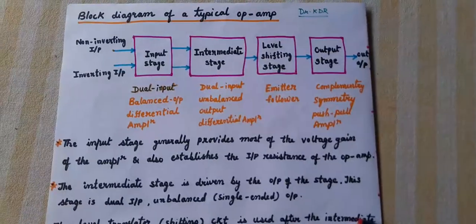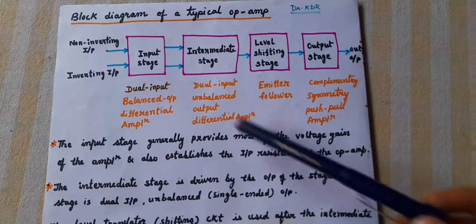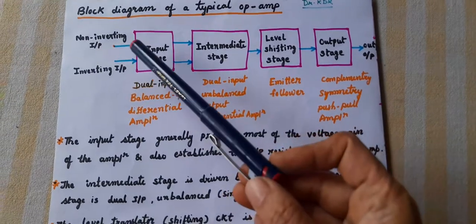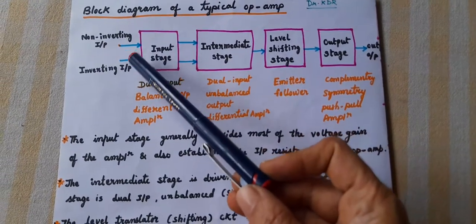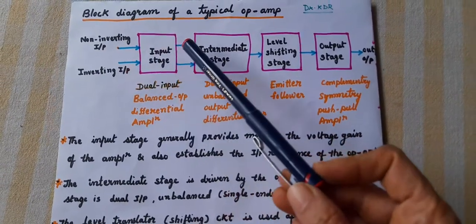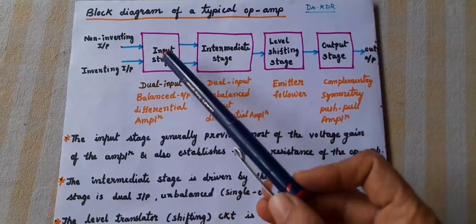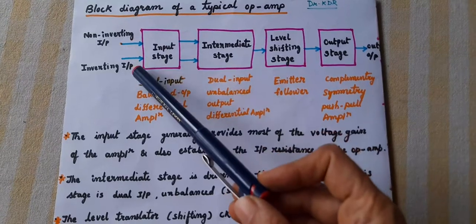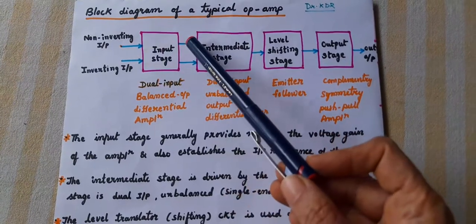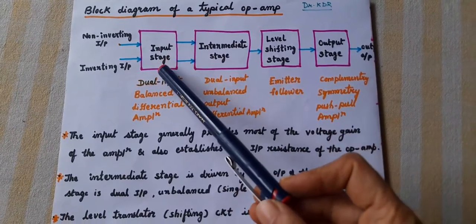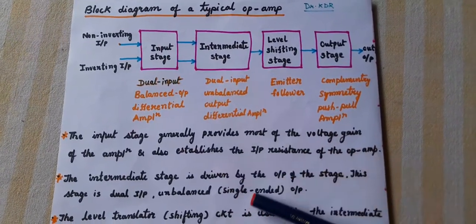Why is it called dual input? Because it is having two inputs and two outputs — it is a balanced output differential amplifier.